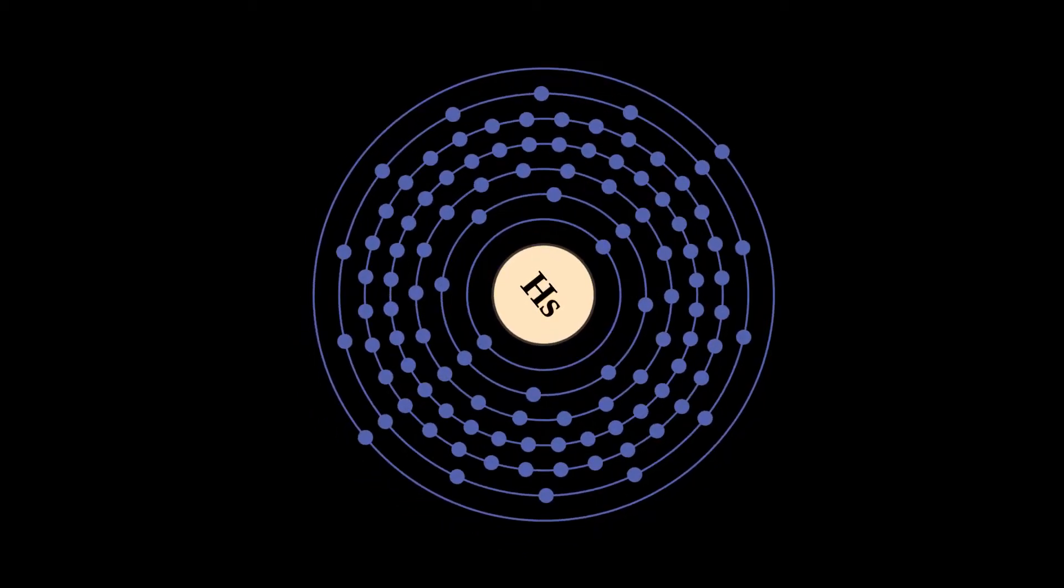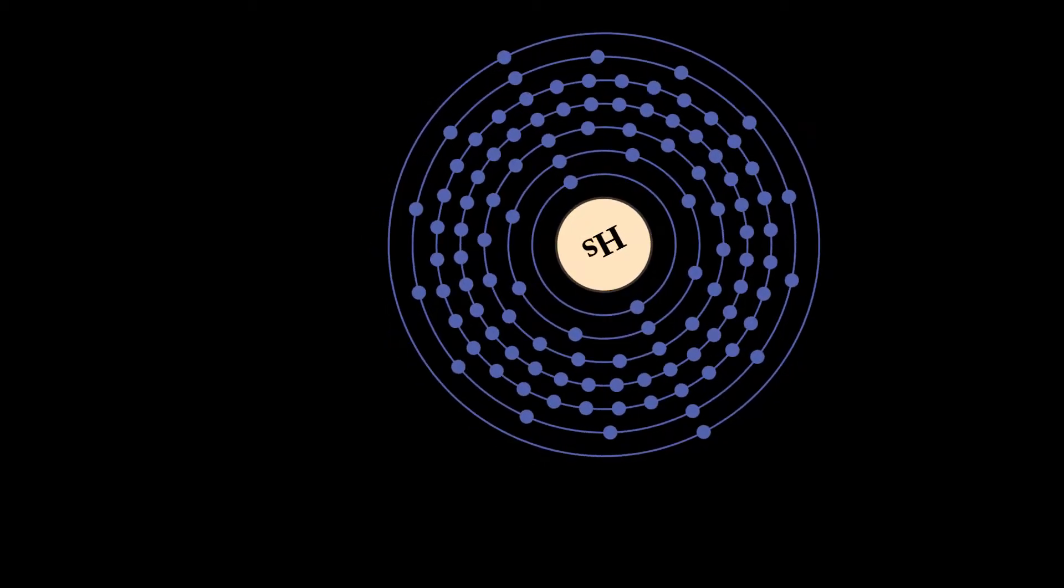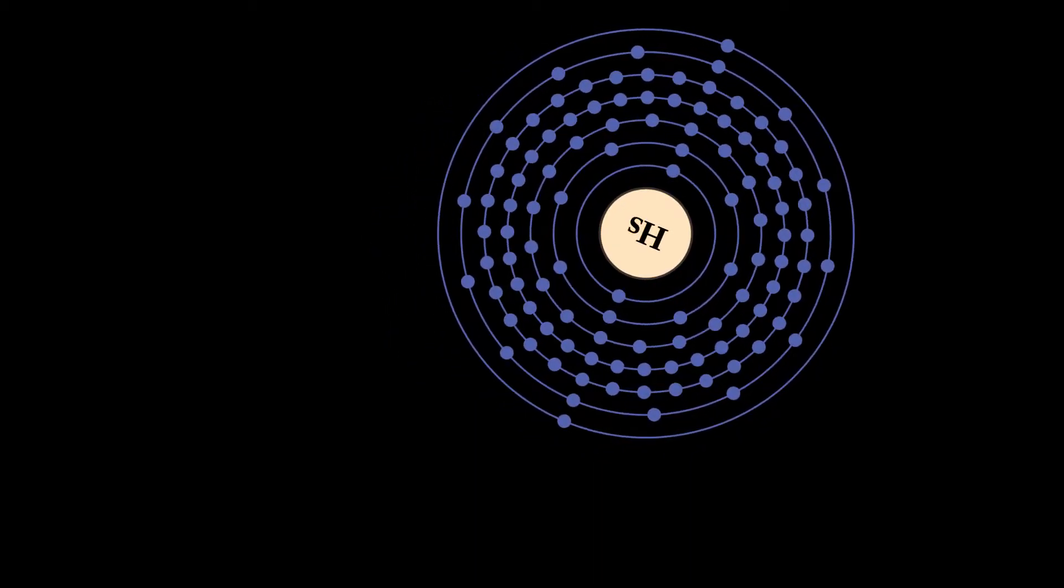Hassium is a synthetic chemical element with symbol Hs and atomic number 108. It is named after the German state of Hesse.